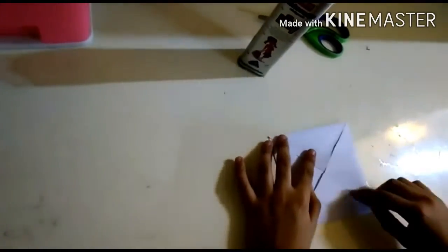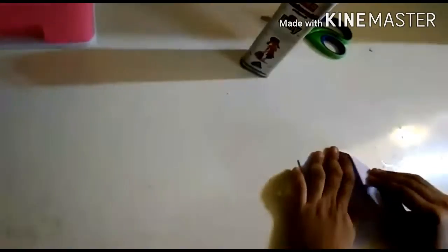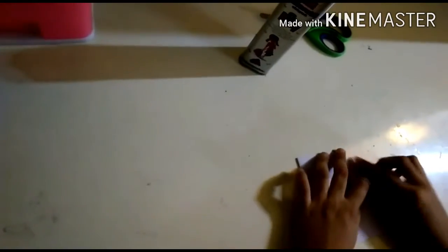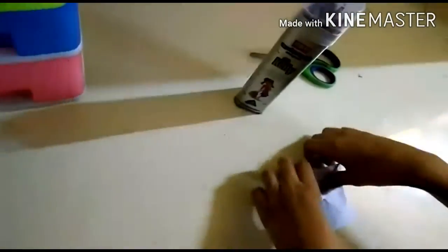Now paper is in square shape and triangles have come. Now we will turn the paper again and make triangles. We have folded, now we fold like this and open it.